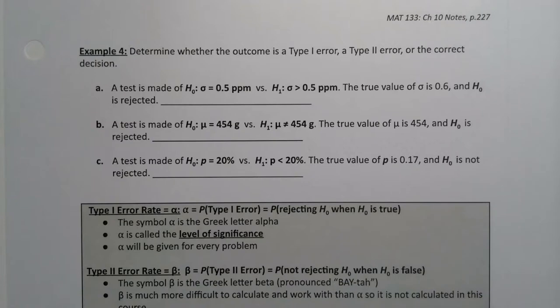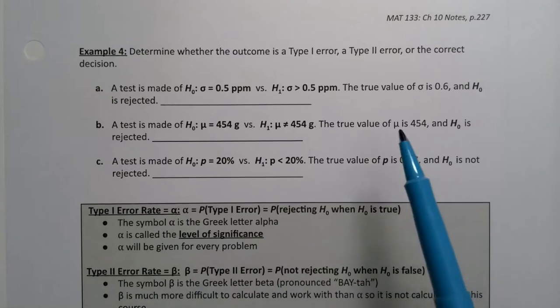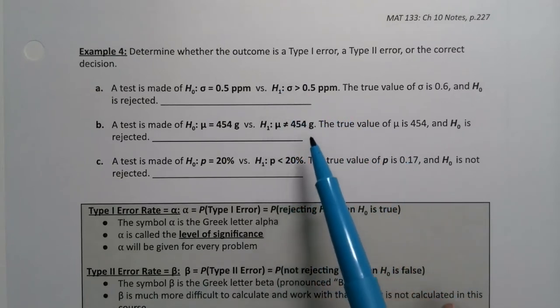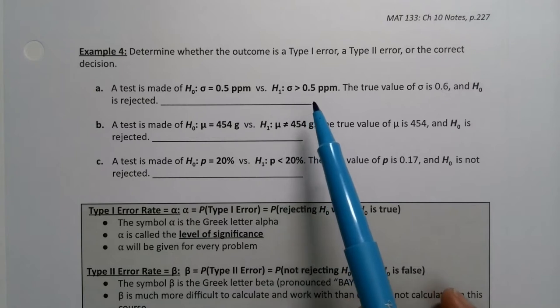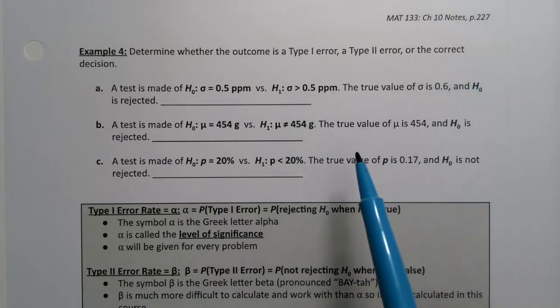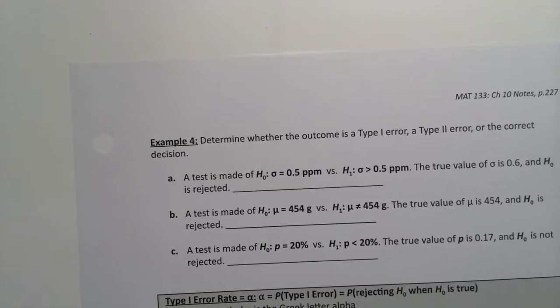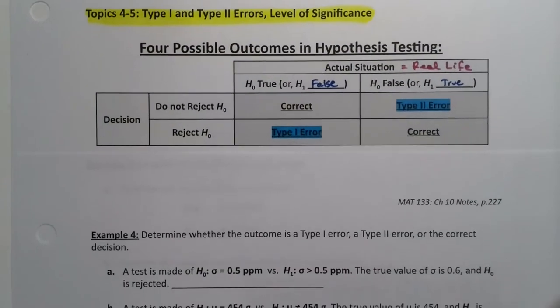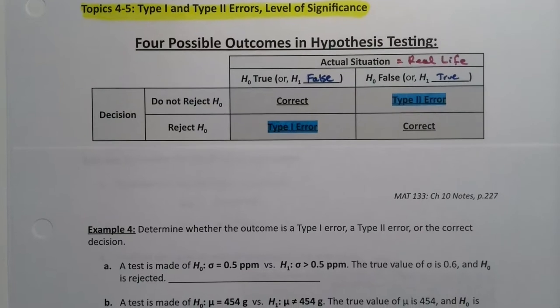So we've seen Type 1 and Type 2 errors and how potent and powerful they can be for a real-life situation. We want to determine based on our null and alternative hypotheses whether we can figure out whether a Type 1 or Type 2 error would be made or a correct decision based on the context of the problem. For this it'll be really helpful to actually have that little table available to us.